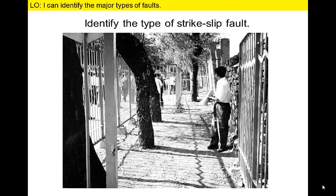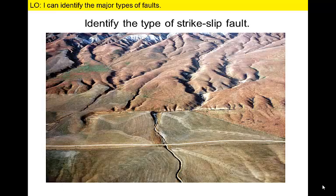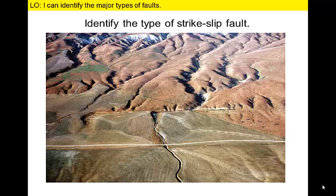Let's look at some pictures of strike-slip faults and classify them as left or right lateral. Is this line of trees from China offset by a right or left lateral strike-slip fault? In this case, it's a right lateral fault — follow the line of trees in the foreground to the end and you'd have to move to the right to match up with the next line of trees. Is this stream valley offset by a right or left lateral strike-slip fault? The stream in the upper part of the image is offset to the right of the stream in the lower part, making it a right lateral fault. This is the San Andreas fault.